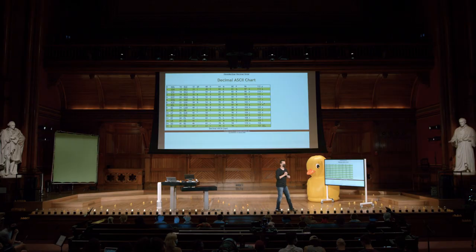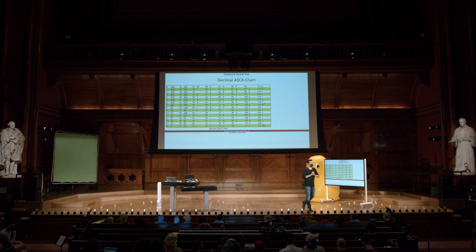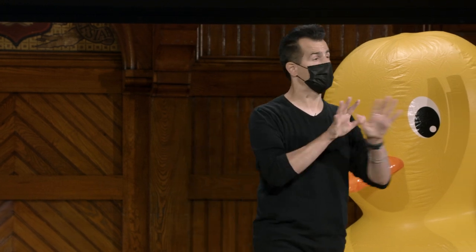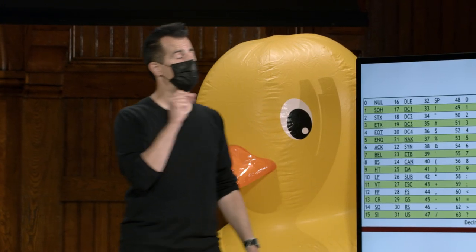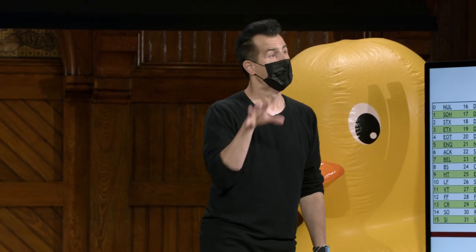Boa pergunta. Apenas strings são acompanhadas por nulos no final, porque todos os outros tipos de dados que falamos até agora são de comprimento finito e bem definido. Um byte para char, quatro bytes para ints, e assim por diante.